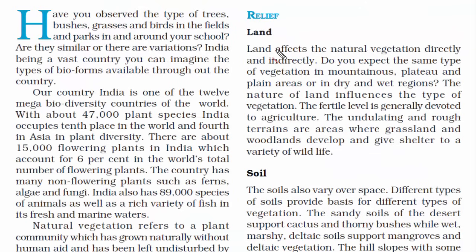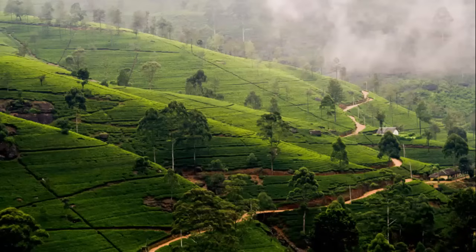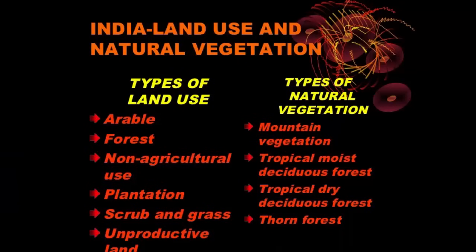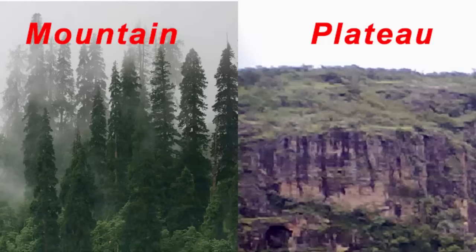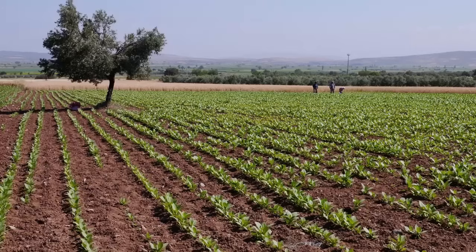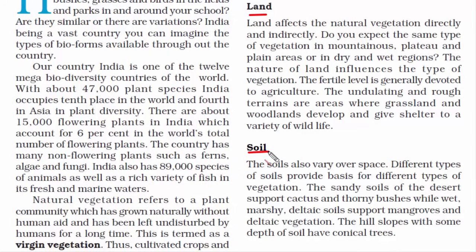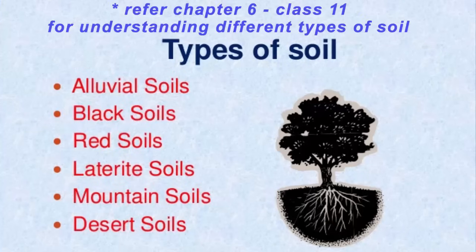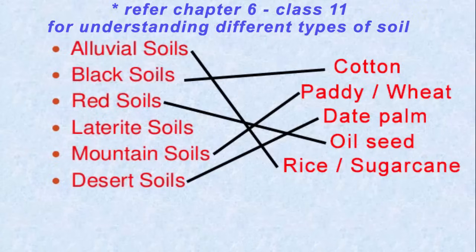We divide the factors into two broad categories: relief and climate. Under relief, we have land and soil. Land has a direct and indirect effect on natural vegetation — mountains and plateaus will have different kinds of trees, and fertile land is suitable for agriculture. Coming to soil, just like land, soil also varies from place to place. India has around 6 to 7 types of soil, and different soils produce different kinds of plants. For example, you will not see lush green plants growing on sandy soil, and cotton grows in black soil but not in red soil.